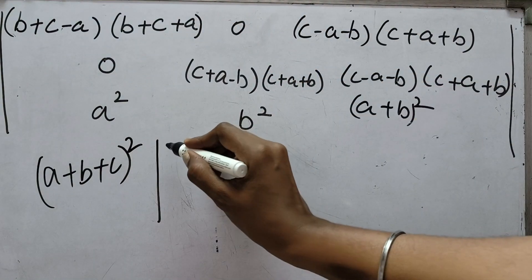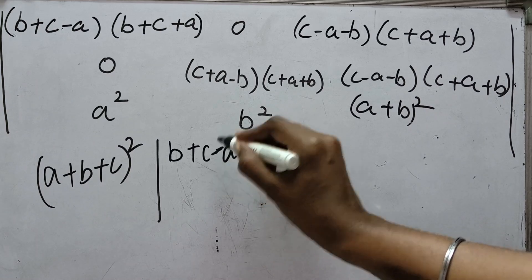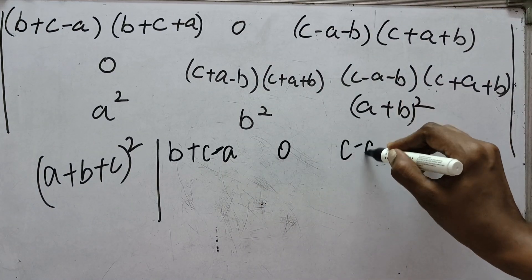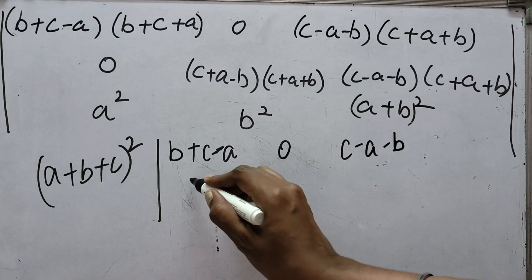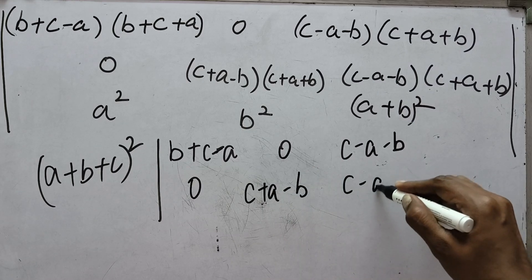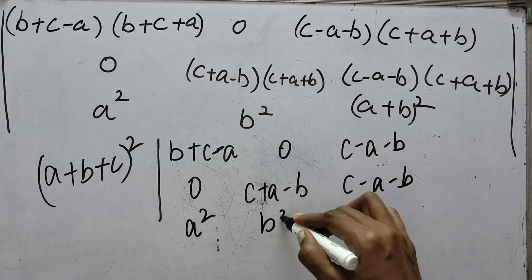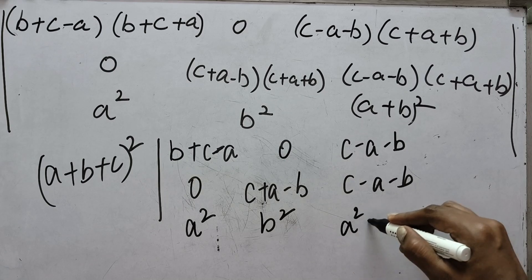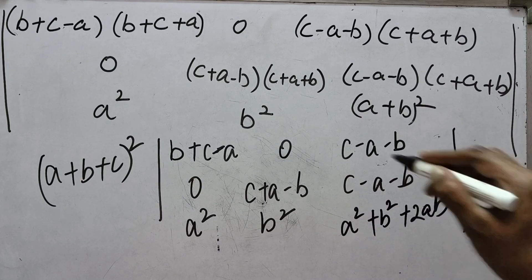After taking (a+b+c)² out, what remains internally: row 1 is (b+c−a), 0, (c−a−b); row 2 is 0, (c+a−b), (c−a−b); row 3 is a², b², a²+b²+2ab.